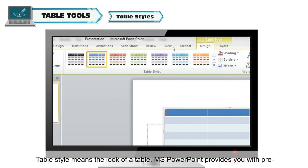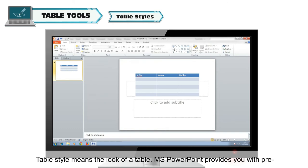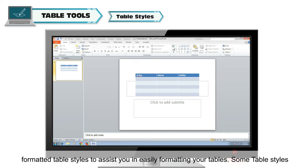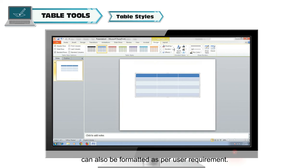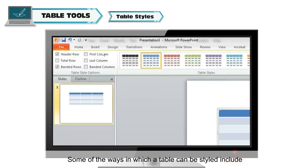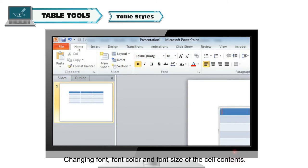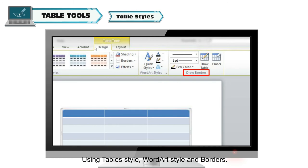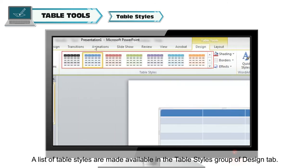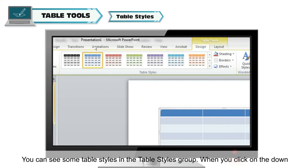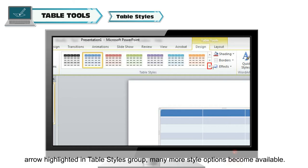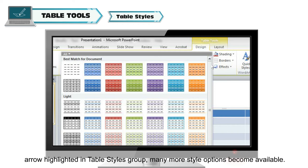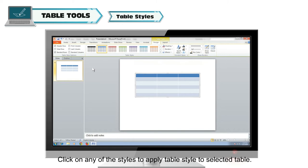Table Styles: Table Style means the look of a table. MS PowerPoint provides pre-formatted table styles to assist you in easily formatting your tables. Some table styles can also be formatted as per user requirement. Ways to style a table include making the header row bold, changing font, font color, and font size of cell contents, and using Table Style, Word Art Style, and Borders. A list of table styles is available in the Table Styles group of the Design tab. Click the down arrow to see more style options, then click any style to apply it.